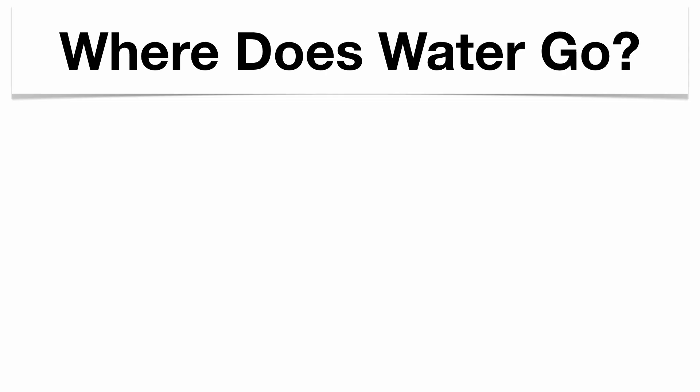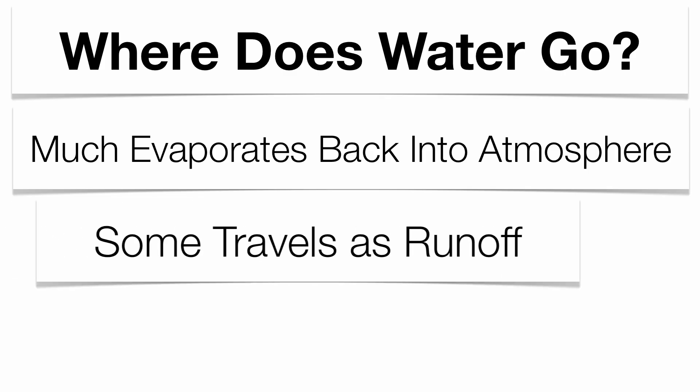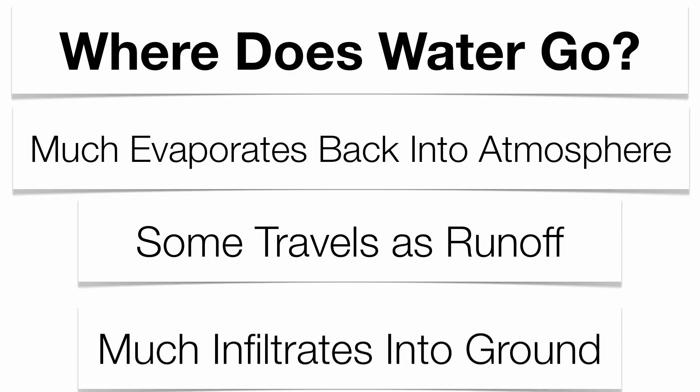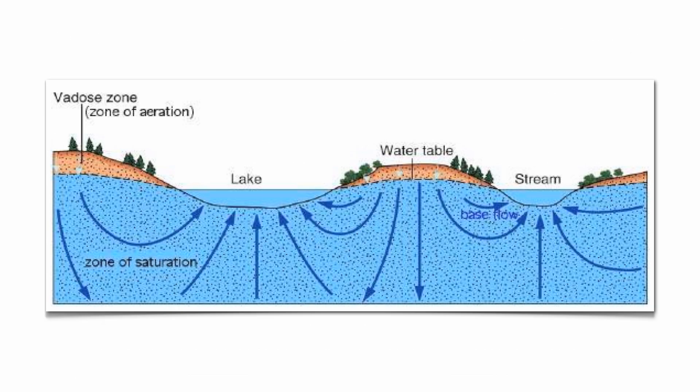With water that falls as precipitation, it's going to hit the surface — then where does it go? The water is going to interact with the surface in a couple of different ways. It can either evaporate back into the atmosphere, travel as runoff if the soil is completely saturated, or the soil will allow it to infiltrate into the ground and become what's called groundwater.